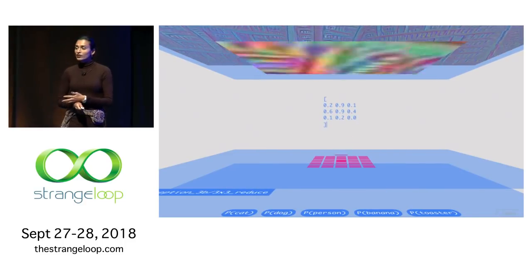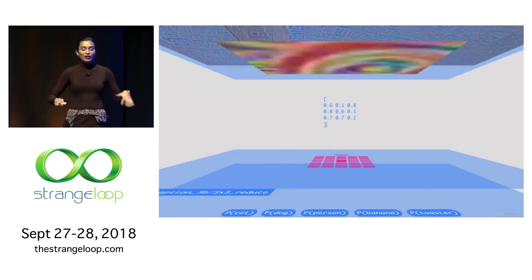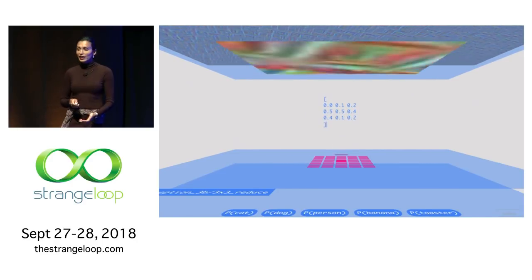We multiply each of the values in the receptive field by the weight, and we sum them to get this neuron's output value. Now, this filter is learned during training, and the same filter is applied across all neurons in a layer.